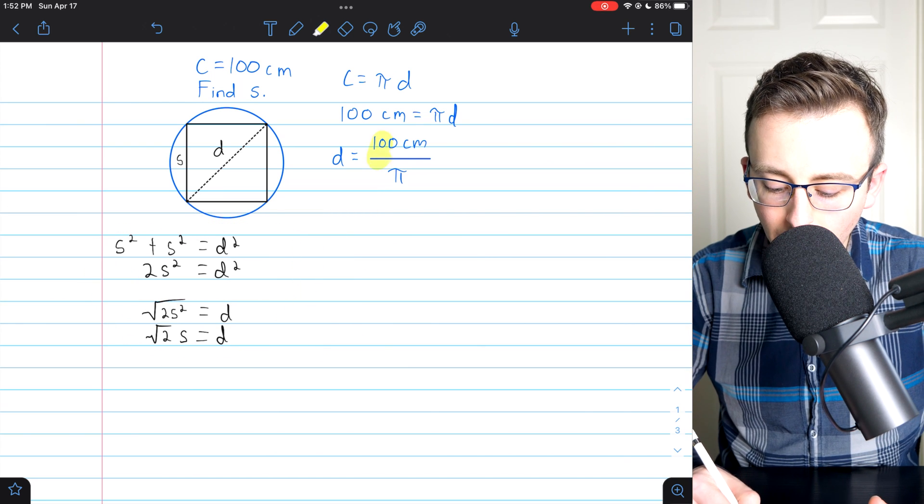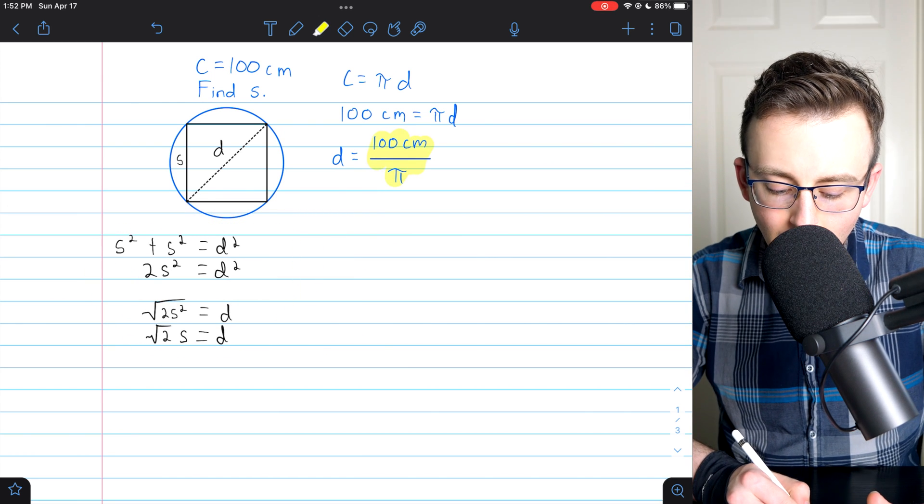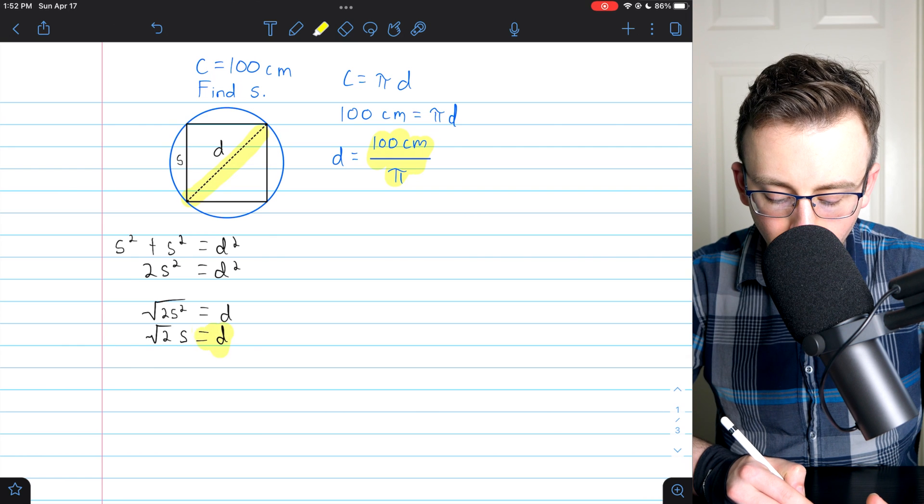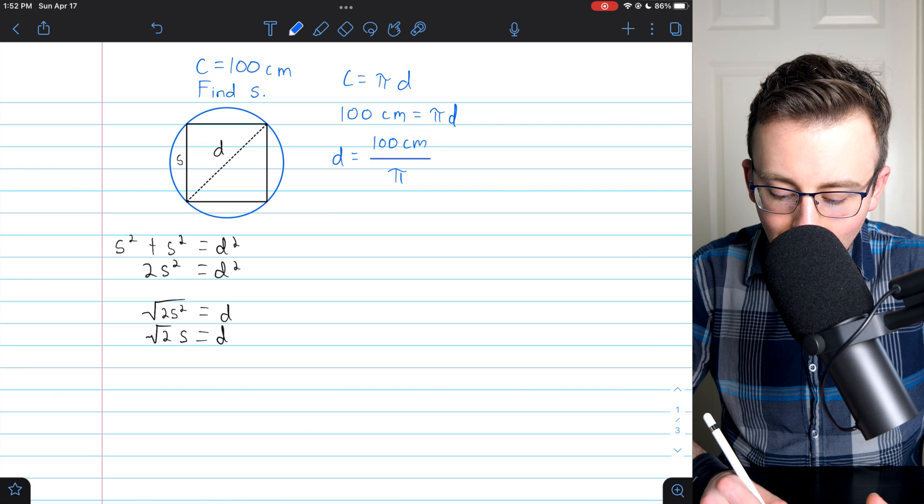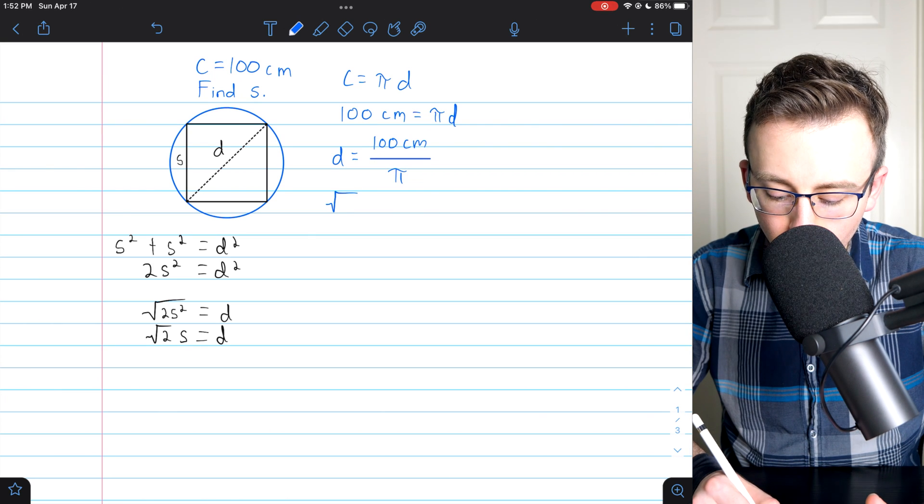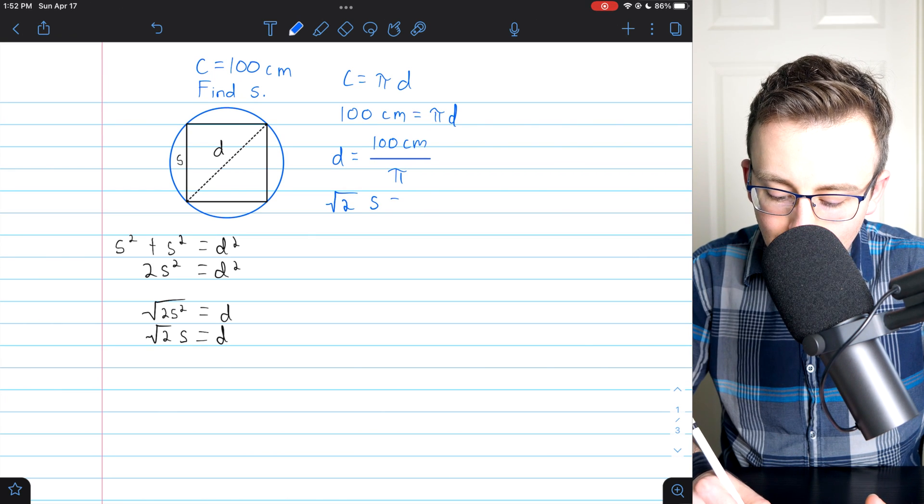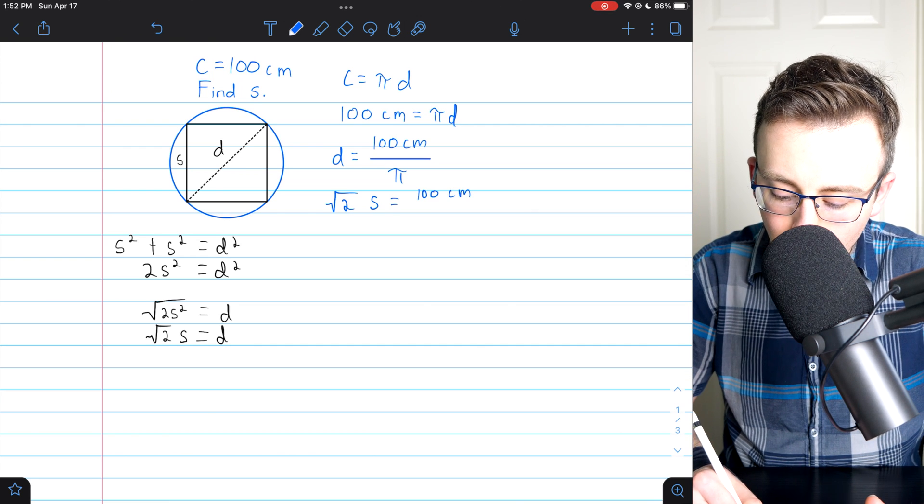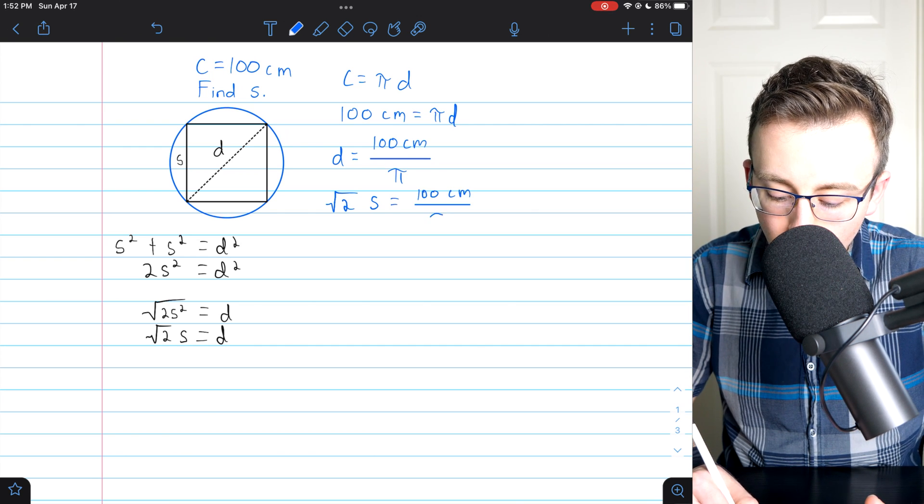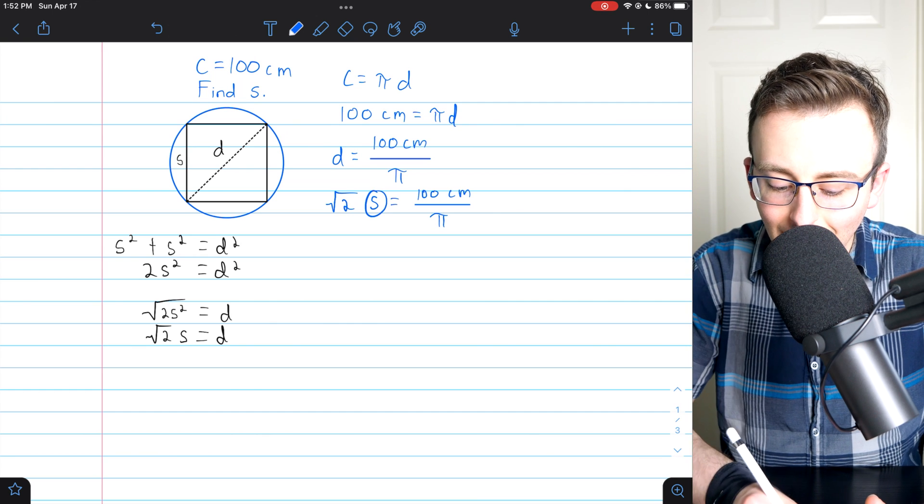is equal to 100 centimeters over pi, but the diameter is also the square's diagonal, which is square root of 2 times s. So we have that square root of 2 times s is equal to 100 centimeters divided by pi. And we want to find s, the side length.